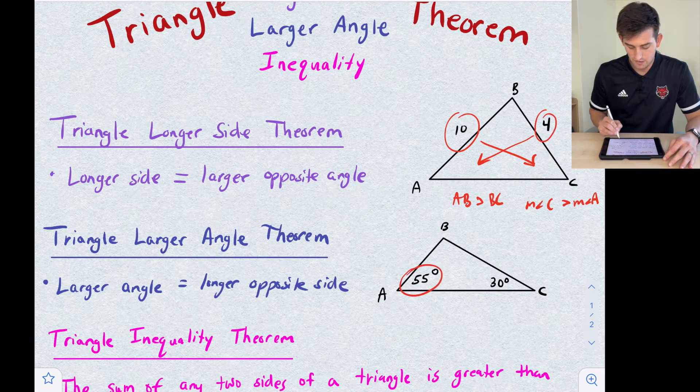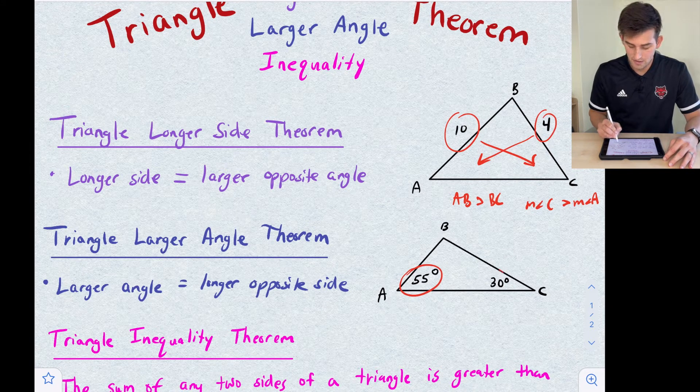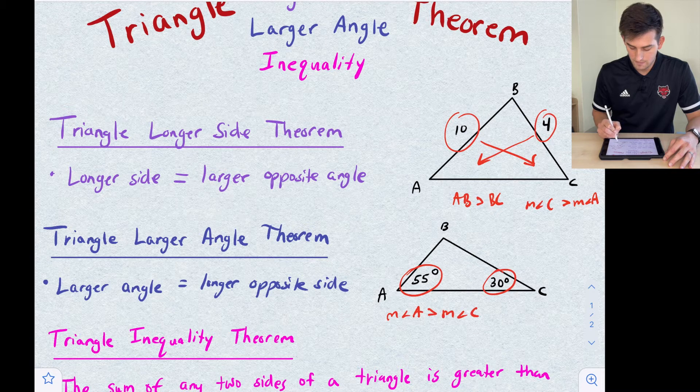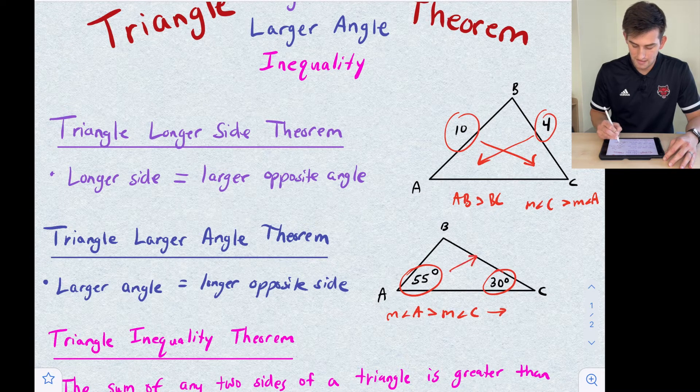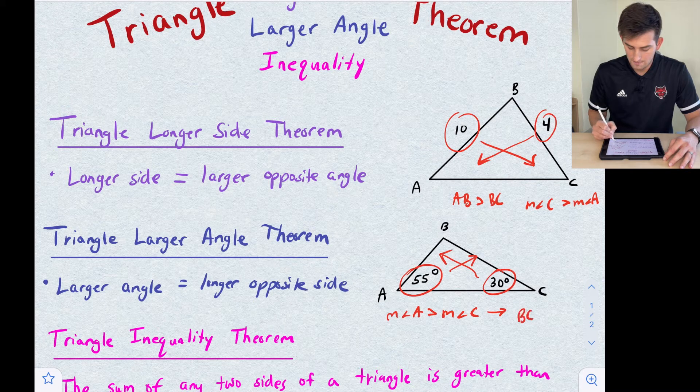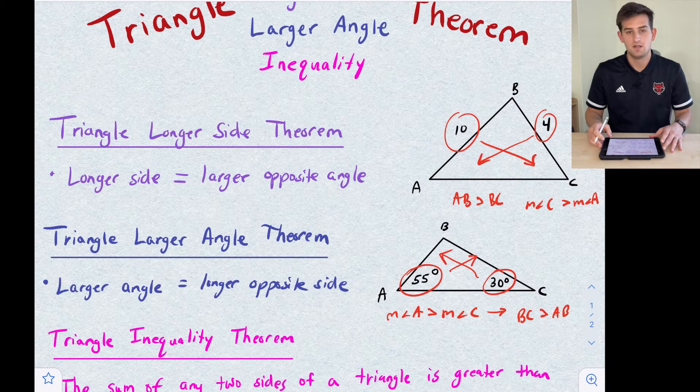We see that angle A has a measure of 55 degrees and angle C has a measure of 30 degrees. Since the measure of angle A is greater than the measure of angle C, that will lead to the opposite sides having that same relationship. So we're going to say that BC is greater than AB.